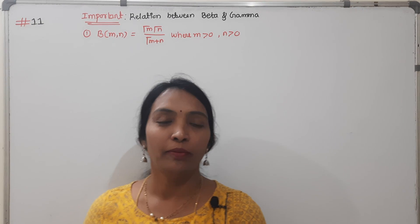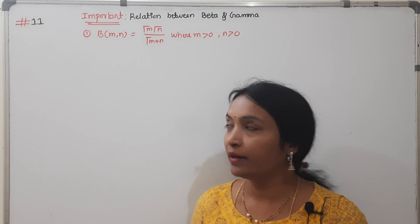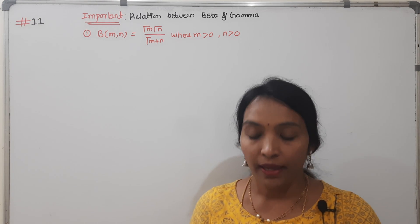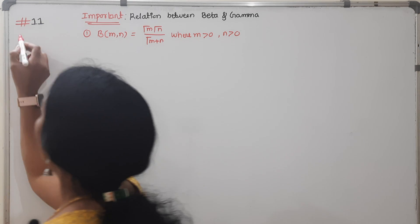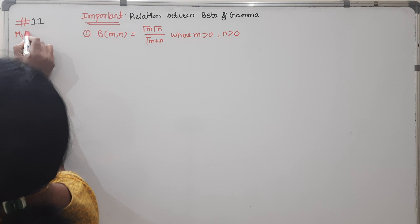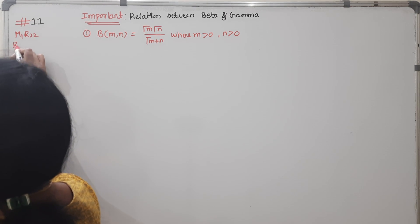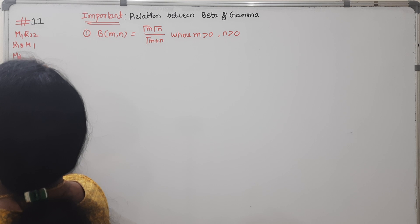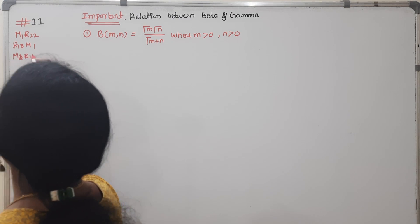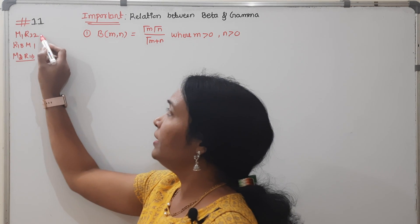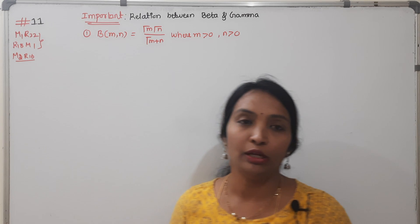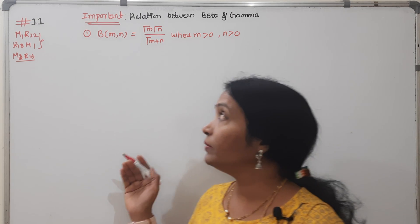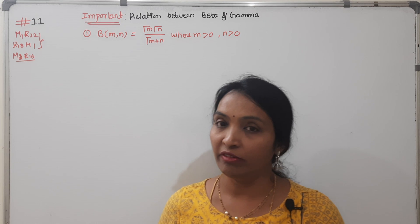Hi all of you. Welcome back to Ramah Reddy Maths Academy. This is the 11th lecture in our Unit 3 — everyone is in Unit 3: M1, R22, R18, M1 and M2, R16. This is a different unit, the 3rd unit. I think it's called Calculus Class, Mean Value Theorems, Beta and Gamma Functions.